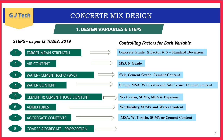Aggregate content: the volume of aggregates depends upon maximum size of aggregates, water-cement ratio, and SCMs or cement content. Coarse aggregate proportion also depends upon water-cement ratio, size of aggregates, and shape of coarse aggregate — whether angular, rounded, or irregular — which alters the required coarse aggregate proportion.